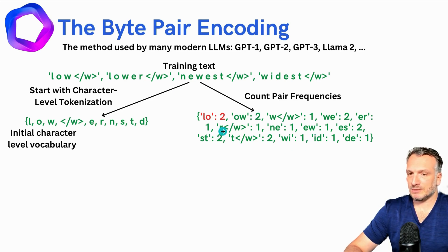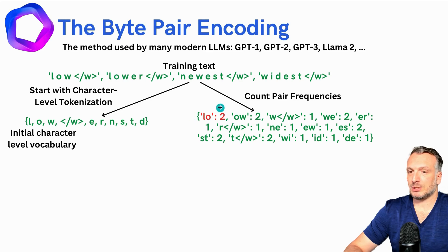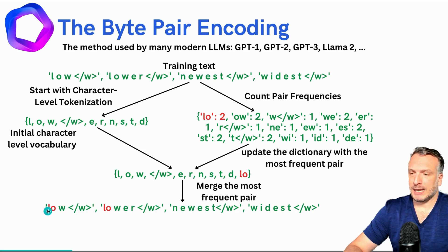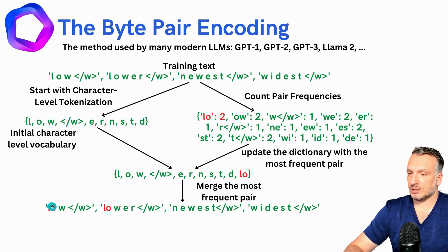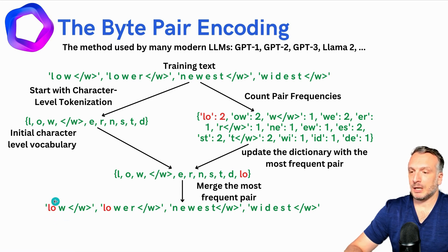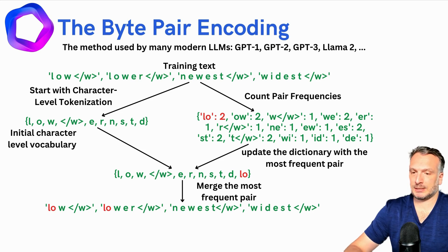What I'm going to do now is find the pair of characters that has the highest frequency and include that pair into the dictionary, then replace in the text the character-level tokens with the pair-of-characters token. So here I take L, O and add it to the character-level vocabulary — I expand the vocabulary. Then I take the original text and replace the original character-level tokens with the pair-of-characters token. You can see that L, O now has no space in between. The spaces were helping me capture the merging between different pairs of characters — merging is a typical concept in byte-pair encoding — and I iterate this process.